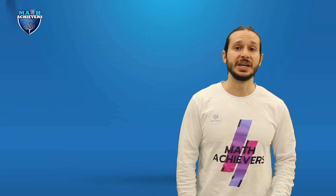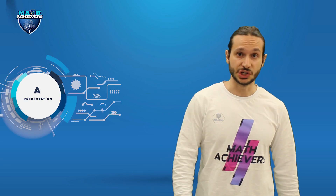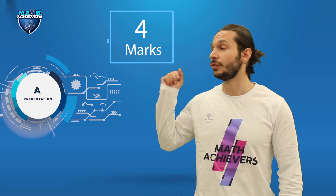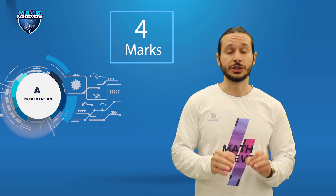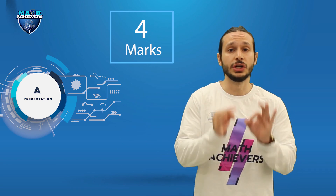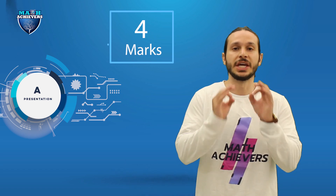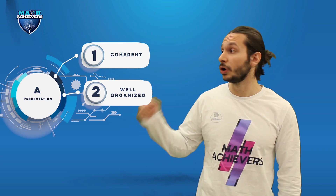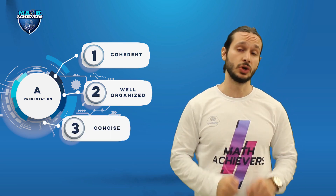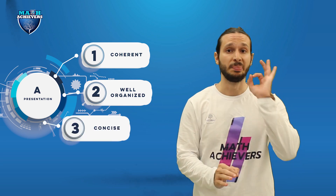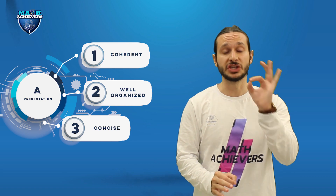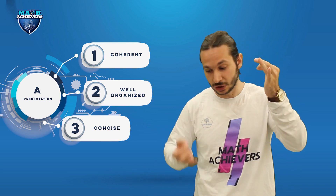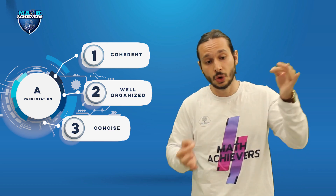Let's start with Criterion A, presentation. The highest score for Criterion A is four marks. In order to achieve the full score, the exploration must be coherent, well organized, and complete. Your idea must have a starting point and an ending point, and both the starting point and the ending point must be linked well together.